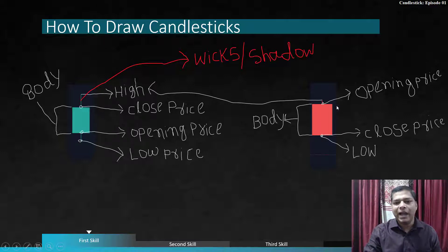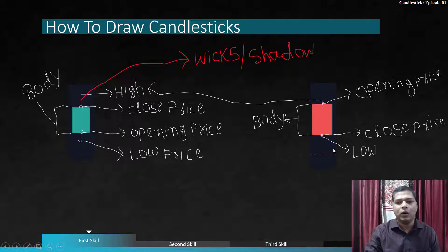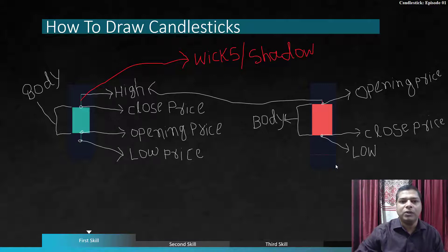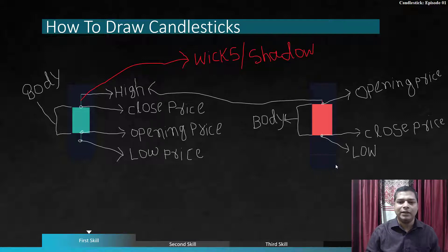The same applies to the red candle, which is a bearish candle. In a bearish candle, the open price is greater than the close price — the price goes down. The length from opening price to closing price is called the body. The upper shadow above the open price is the high price, and the lower shadow below is the low price. The bearish candle also has four components: open, low, close, and high.